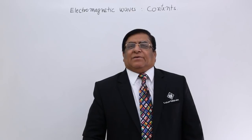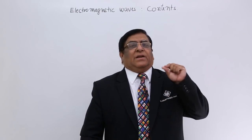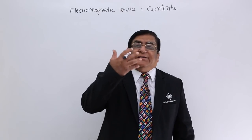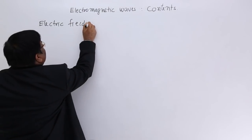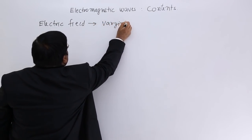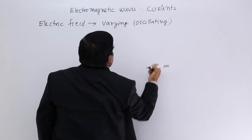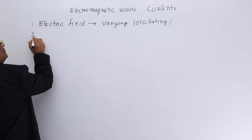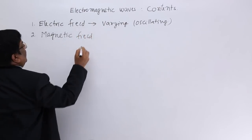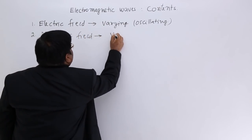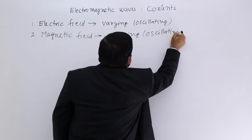An electromagnetic wave is simply a type of wave which does not need a medium — that is its characteristic. An electromagnetic wave consists of two things: one is an electric field which is varying, meaning it is oscillating continuously, and the second thing it carries is a magnetic field, which is also a varying or oscillating magnetic field.